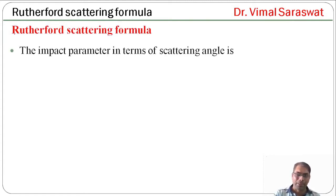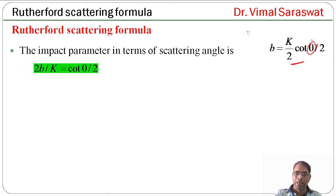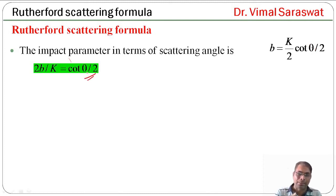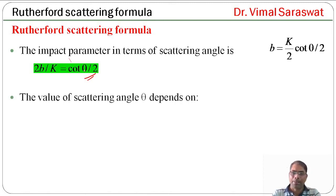The impact parameter in terms of scattering angle is b equal to k/2 times cot(θ/2), where θ is our scattering angle. Equivalently, 2b/k equals cot(θ/2). This formula we have already discussed in our last lecture. The value of scattering angle θ depends on the impact parameter b.